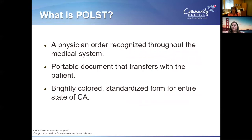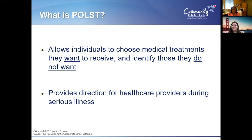This form is recognized throughout the medical system and transfers with the patient — from one hospital to the next or to a rehab facility. It's a standardized brightly colored pink form used statewide in California. It allows individuals to choose medical treatment — what they want, don't want, or only want on a trial basis — and provides direction for healthcare providers during a serious illness. If something happens and the family calls 911, this document can go with you in the ambulance or be brought to the hospital, and it tells providers what you do and don't want before any treatment is started, even in the ambulance.